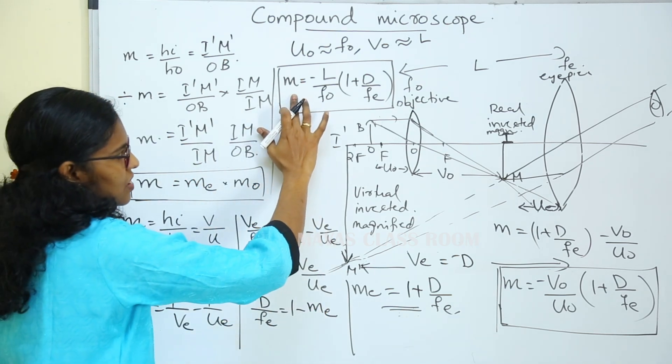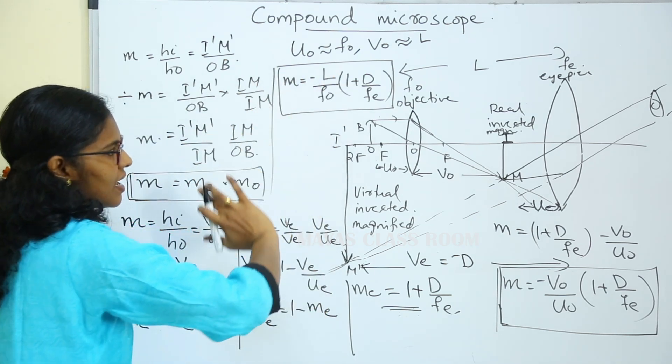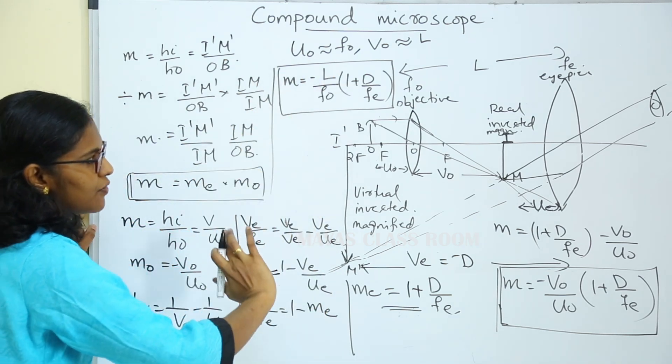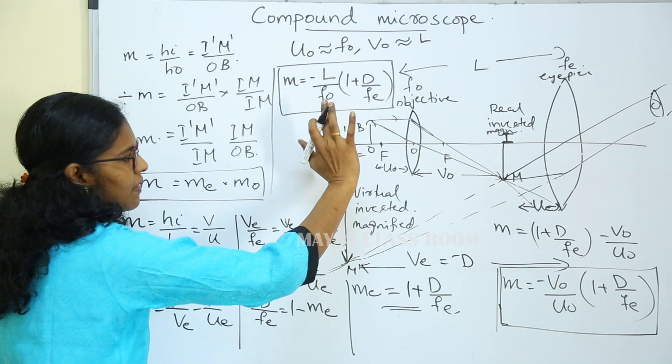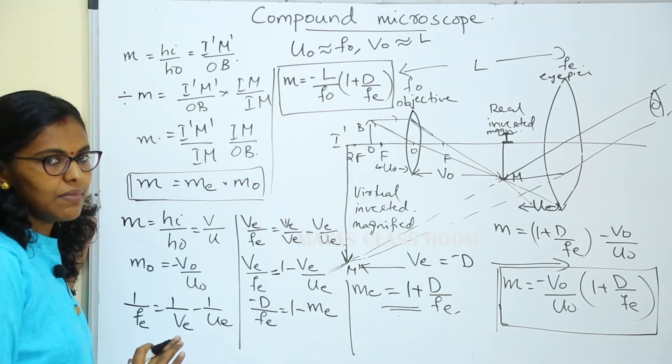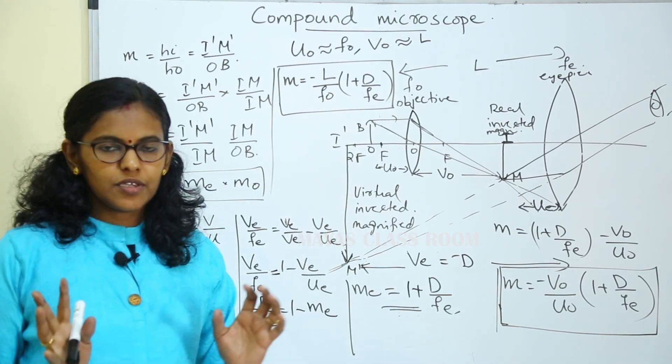If the object is placed very close to the focus of the objective, then UO is approximately equal to FO, and L is the tube length. The magnification becomes M equals minus L divided by FO into 1 plus D divided by FE.